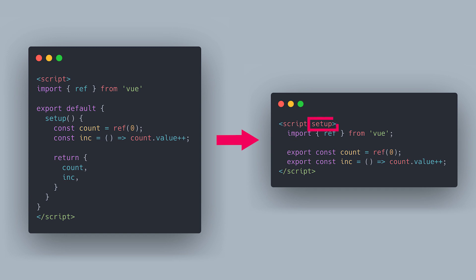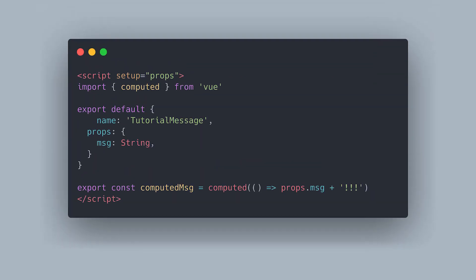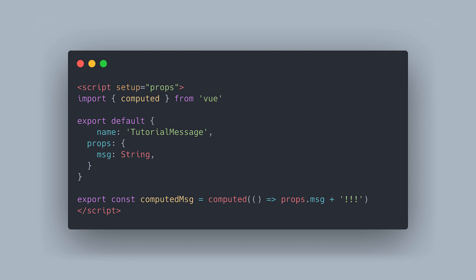This allows us to skip a whole bunch of boilerplate and immediately get to writing our important code. Using the setup attribute we can directly export our variables and methods like we were writing just a plain piece of JavaScript, cutting out the lines necessary for this simple component from 10 to just 2. To get your component variables like props and emit, all you need to do is add them as arguments to the setup attribute. For other component options like names or props, the Vue team have solved this by adding your normal export default Vue object to define these options.